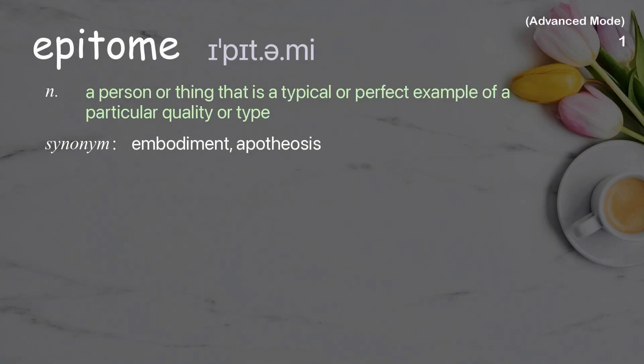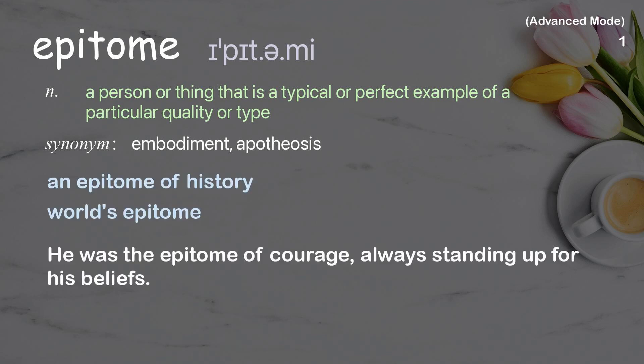Epitome. A person or thing that is a typical or perfect example of a particular quality or type. Examples: an epitome of history, world's epitome. He was the epitome of courage, always standing up for his beliefs.